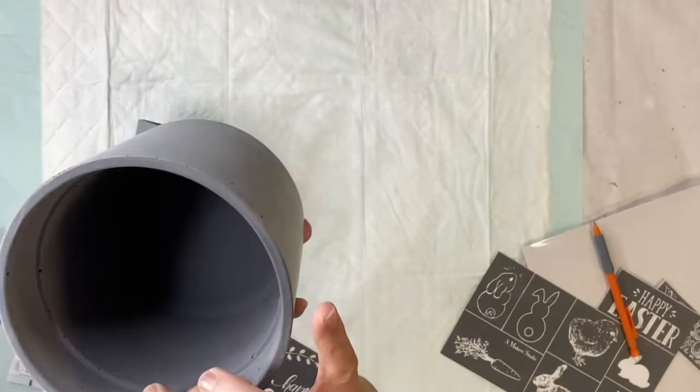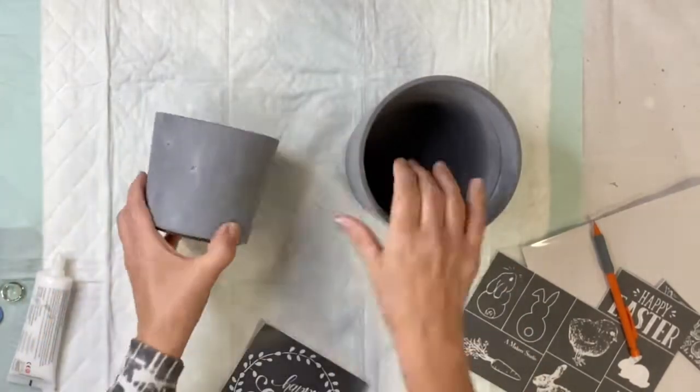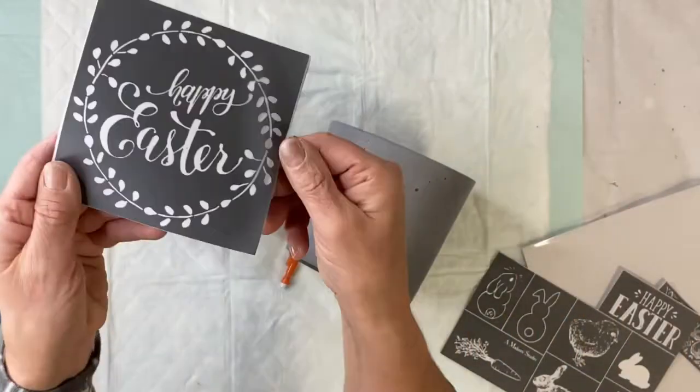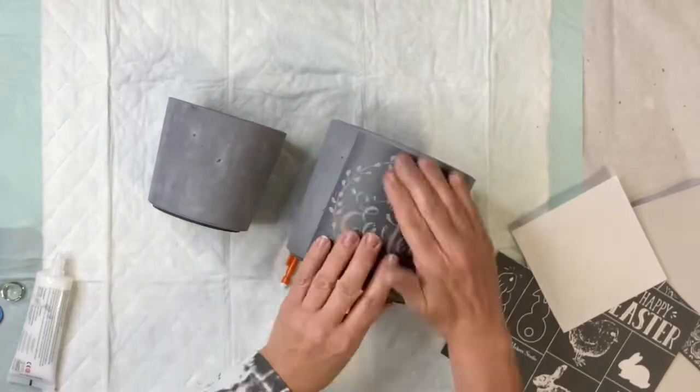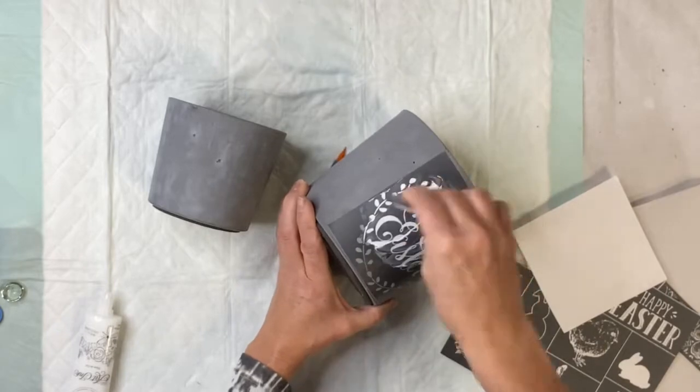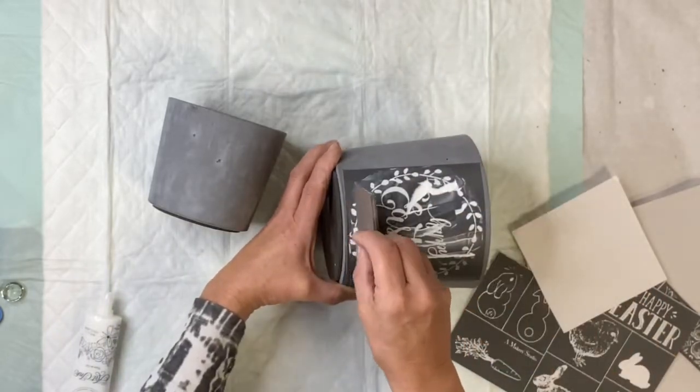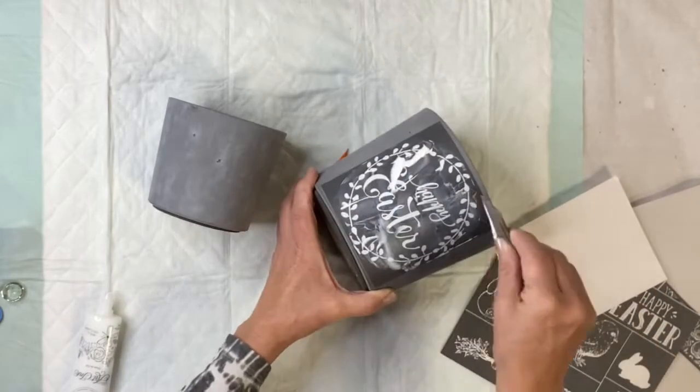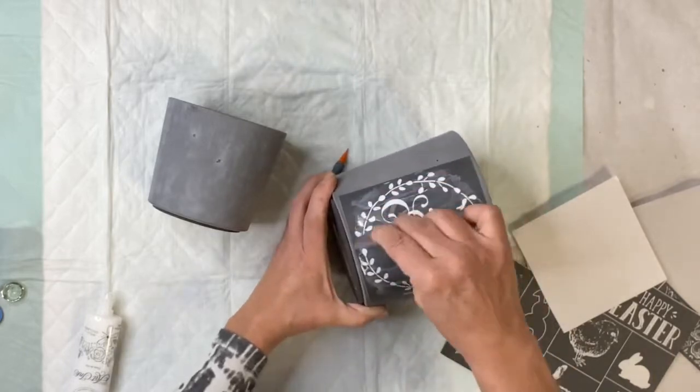I found these ceramic pots at IKEA. They were not expensive—I would say under five dollars. Again, I'm using the same Well I Declare ink and the same stencil, but I just loved how the two of these looked together.